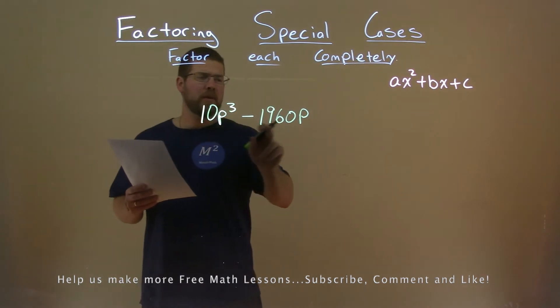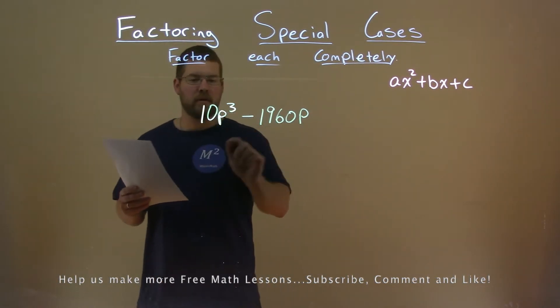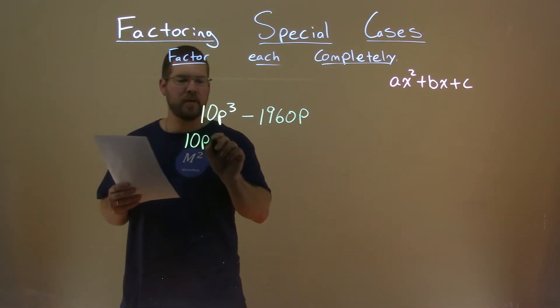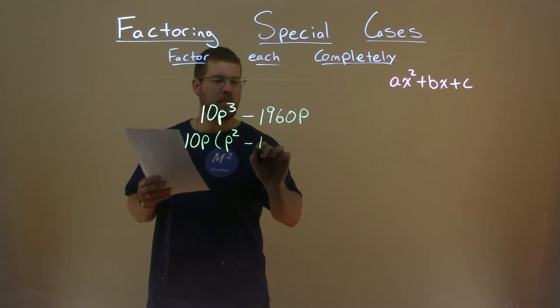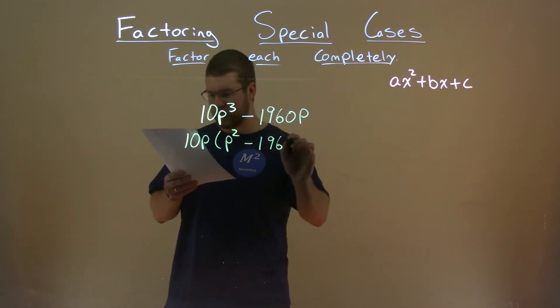I notice there's a p in both parts and a 10 in both parts, so let's pull that out. We have a 10p here, and we're left with p squared minus 196.